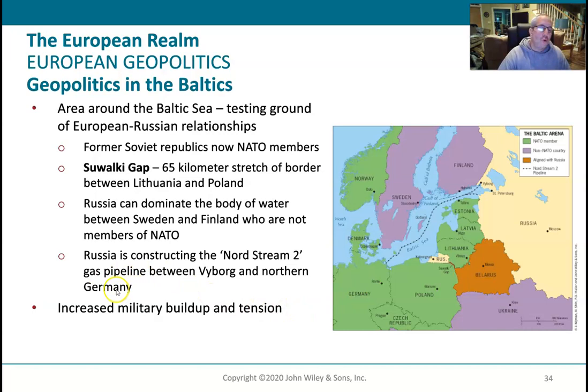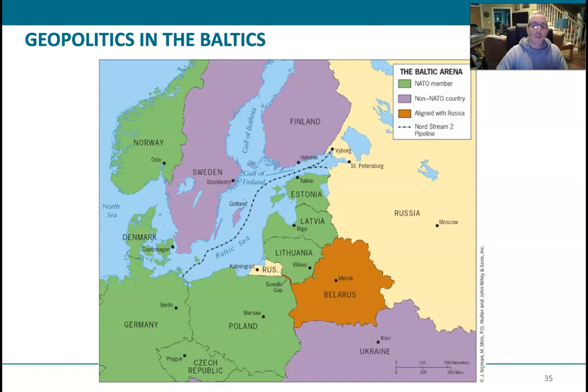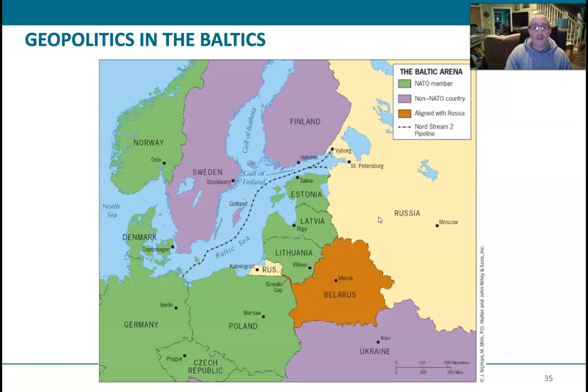You see the Nord Stream 2 pipeline. Europe was highly dependent on fossil fuels from Russia before this invasion and has quickly been weaning itself from that dependence. Here's a more blown-up map of this entire area. This little spot right here is actually part of Russia — a piece they annexed when they had all these countries in the Soviet Union and kept when those countries gained independence.